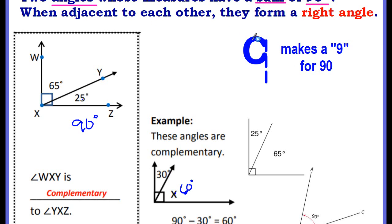Complementary starts with a C. So here's your C. And you could draw a line to make a 9 for 90. Complementary starts with a C and you can turn it into a 9 for 90. That's a hint if you need to remember the degree of complementary angles.